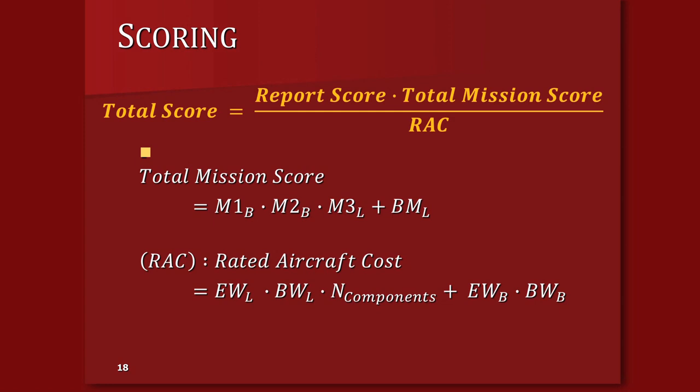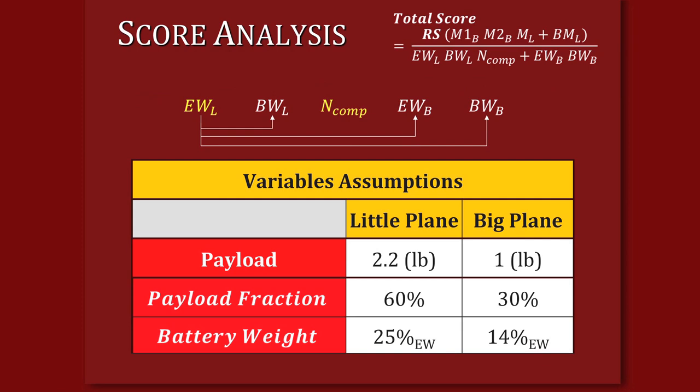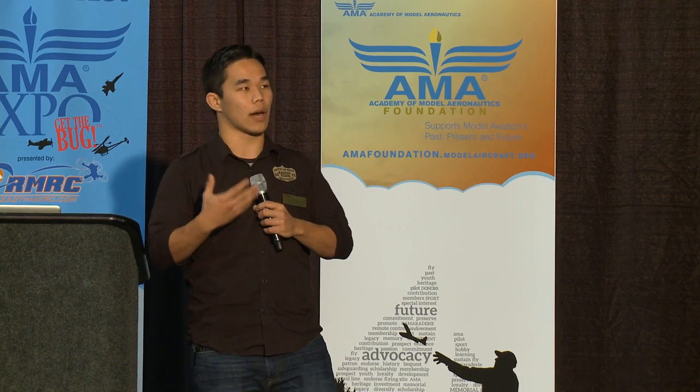To focus our design approach, we do a score analysis: we calculate our score based on certain assumptions, taking into account all scoring factors — report score, mission scores, and RAC — and vary factors such as empty weight, battery weight, and number of components to see how they affect the score. This shows us which variables, if optimized, will lead to a higher score.